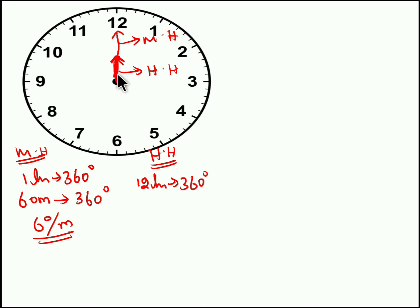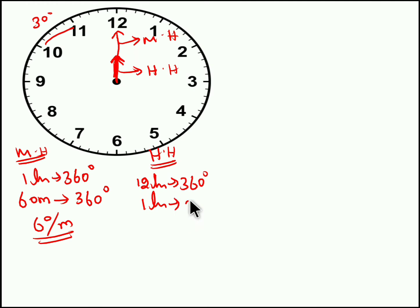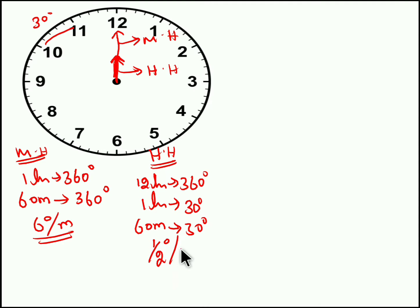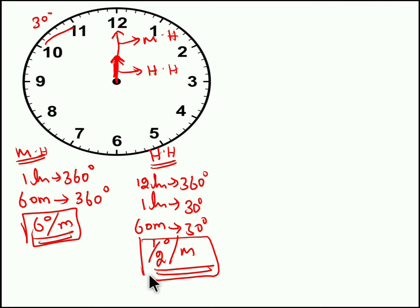A clock is divided into 12 subdivisions, so the complete 360 degrees is divided into 12 equal parts, meaning each subdivision is 30 degrees. For example, from 10 to 11 is 30 degrees, or 11 to 12 is 30 degrees. So in 12 hours if the hour hand covers 360 degrees, in one hour it covers 30 degrees — that is 60 minutes. In one minute it will cover only half a degree. So half a degree per minute is the speed of the hour hand.